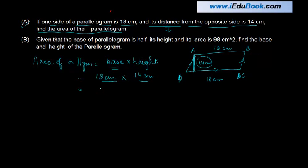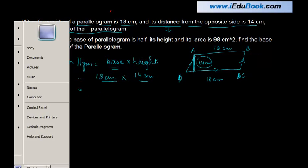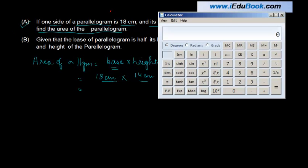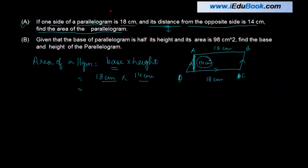So 18 cm into 14 cm. Let's get the calculator to see what's the solution for this. 18 into 14 equals 252. 252 cm square. That's the area of this parallelogram.